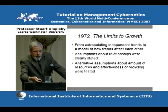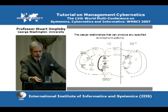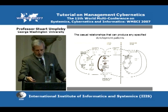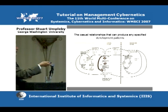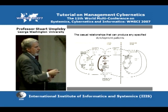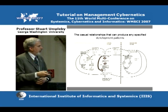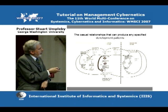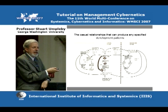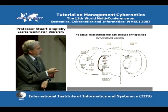The advantage of The Limits to Growth was going from extrapolating independent trends to showing how the trends affect each other. The assumptions were clearly stated, and alternative assumptions about resources and recycling were tested. Basically, you have industrial capital leading to more machine tools and productive capacity. Some industrial output goes into service capital — hospitals, schools — some into agriculture: combines, irrigation equipment, grain storage. Your industrial output is your productive capacity, and to the extent you reinvest in machine tools, you increase your capability to produce even more.